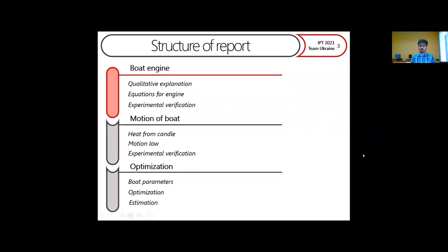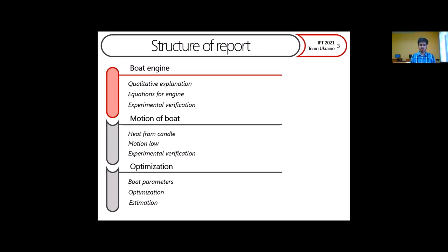Now let's move to the structure of the report. In the first part we consider the principle of the engine's work — we give a qualitative explanation, write down equations, and verify them by experiment. In the next part we find heat from the candle, write down the motion law for the boat, and verify it experimentally. In the last part we consider parameters, make optimization, and provide estimations.